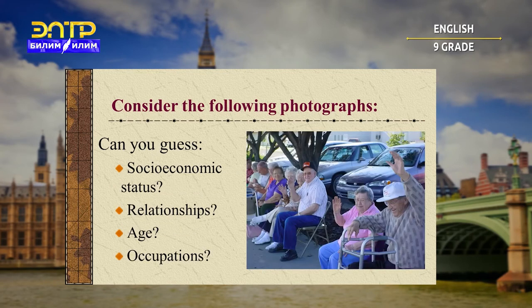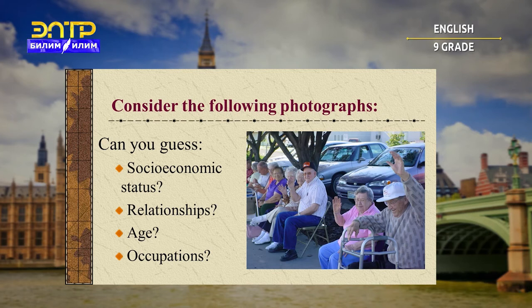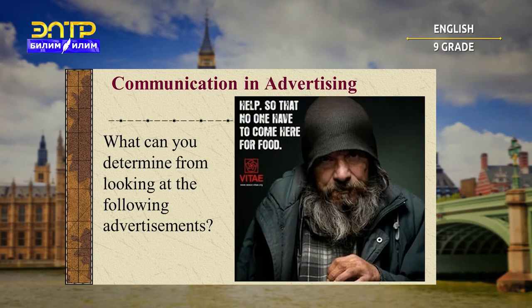As you can see, there are old age pensioners, and our task is to try to guess their socio-economic status, relationship, age, and occupation. As you know, advertisements also communicate and they send us messages. Sometimes they can be hidden so that we should decode and understand them.